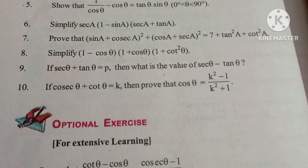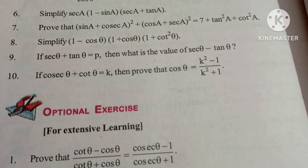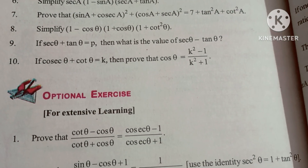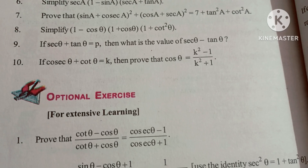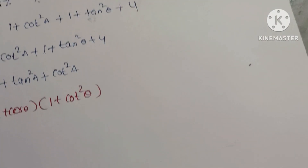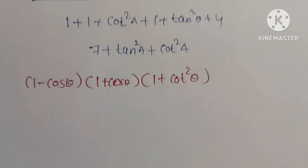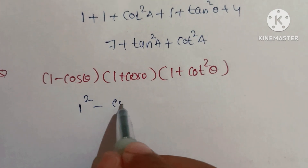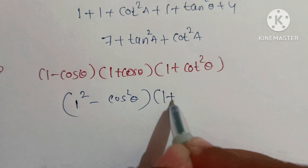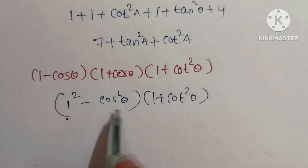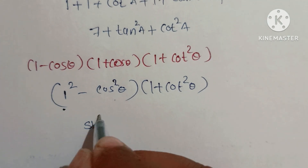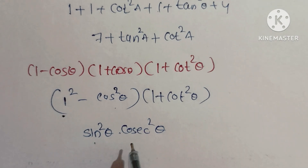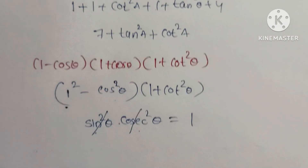Next, 8th question: Simplify (1 - cosθ)(1 + cosθ)(1 + cot²θ). Using (a - b)(a + b) = a² - b²: (1 - cos²θ)(1 + cot²θ) = sin²θ × cosec²θ = sin²θ × (1/sin²θ). They cancel, so the answer is 1.